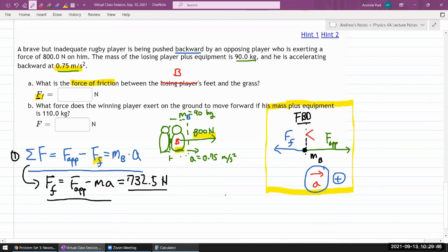Part b says what force does the winning player exert on the ground to move forward if his mass plus equipment is 110 kilograms. Oh, so I need a free body diagram of the winning player or player A or Alice. My A's are always named Alice. So okay, I think I'm gonna need a free body diagram of Alice. Let me draw a free body diagram of Alice. Actually sorry let me just do it right next to Bob so this was the free body diagram of Bob.